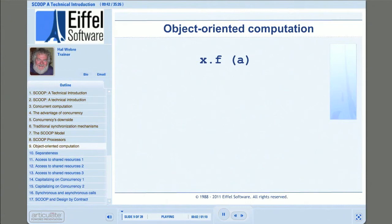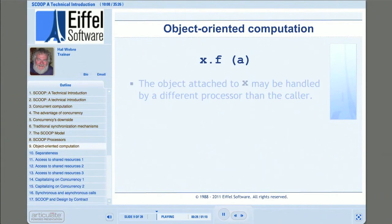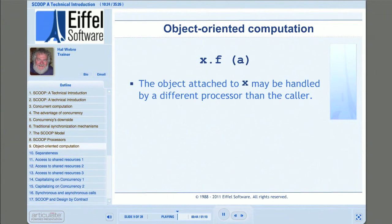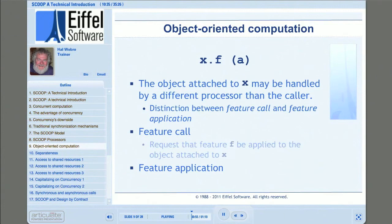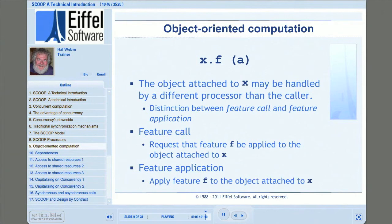As we've already learned, SCOOP is object-oriented programming. A feature F is applied to the object attached to X, possibly involving a set of arguments A. We generally regard this as feature call, or alternatively as feature application. But object-oriented concurrency requires us to think just a little differently. Because the object attached to X might be handled by a different processor than the caller of F, and not necessarily synchronized with the caller, we have to recognize a distinction between feature call and feature application. Feature call is merely a request that feature F be applied to the object attached to X; feature application occurs when the processor handling that object actually gets around to executing F on X.